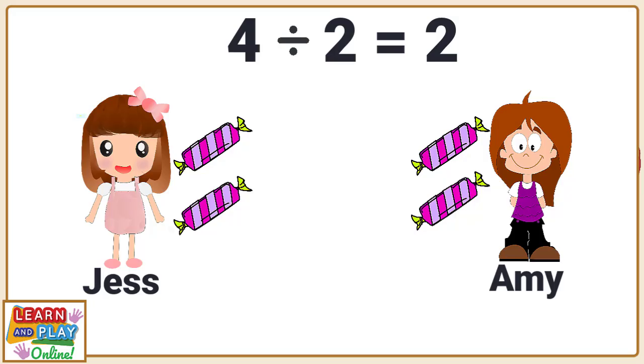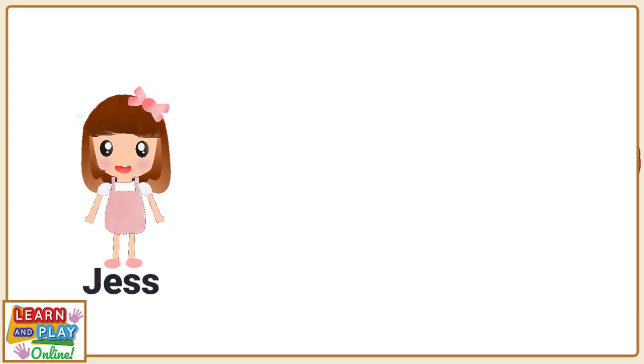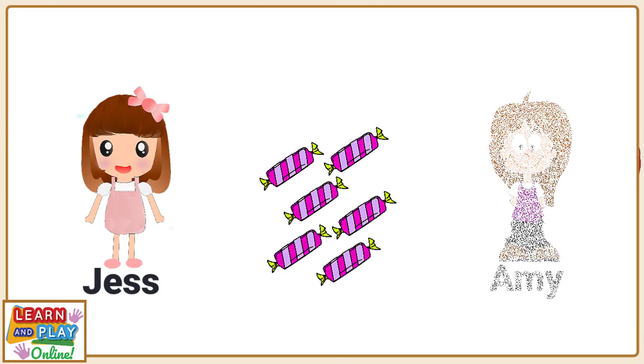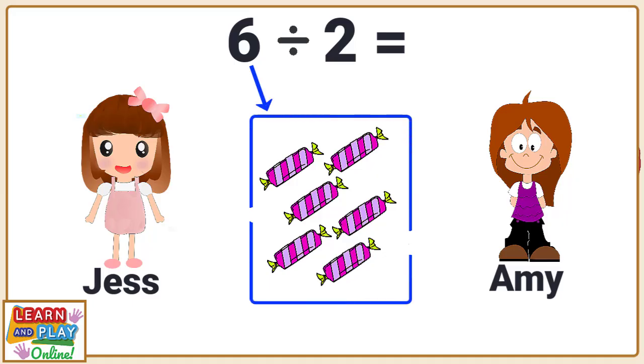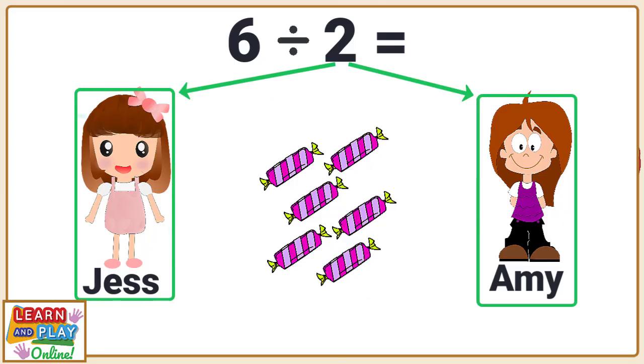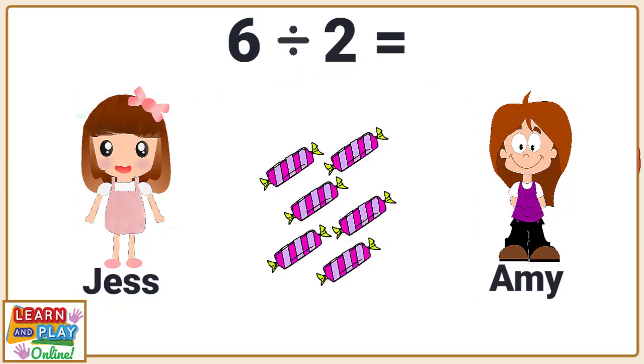Let's now try to solve another division problem. Jess is still in our division problem but this time she has six candies to share with Amy. The number sentence this time is six divided by two because she has six candies and she is dividing them between two people. Let's now share the candies to see how many the girls will get each.